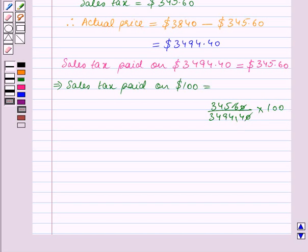We now divide both the numerator and the denominator by 8. So the numerator becomes 432 and the denominator becomes 4368.